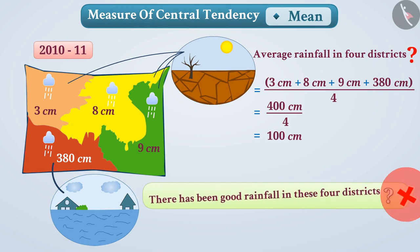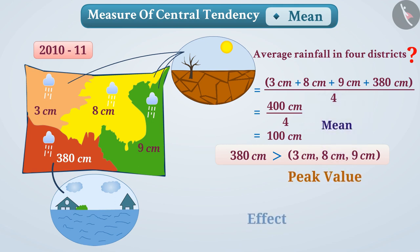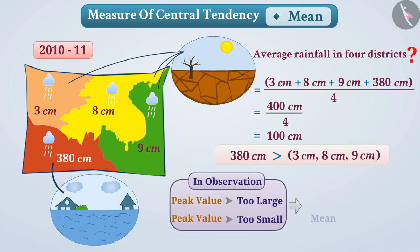No, it would be wrong to say. The extreme value here is 380 cm, which is much larger than the other observations. It has the most effect on the mean. Similarly, peak values have greater effect on the mean. By observing observations here and their mean, it can also be said that if the peak value in observations is too large or too small, then the mean does not represent the best of observations.